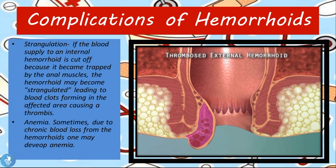Now let's talk about some complications of hemorrhoids. First is strangulation: if the blood supply to an internal hemorrhoid is cut off because it has become trapped in the anal muscles, the hemorrhoid may become strangulated, leading to blood clots forming — a thrombus. The anal muscles contract and relax at different times during the day, and by doing so may cut off the blood supply to the vein, thus causing a thrombus to develop.